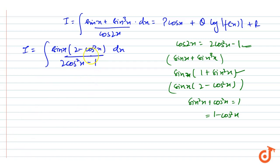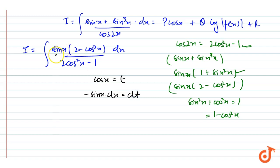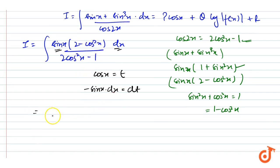Now putting cos x equals to t, so minus sin x dx equals minus dt. We can replace sine x dx by minus dt, so the integral becomes in terms of t, with numerator (2 minus t squared) and denominator (2t squared minus 1).